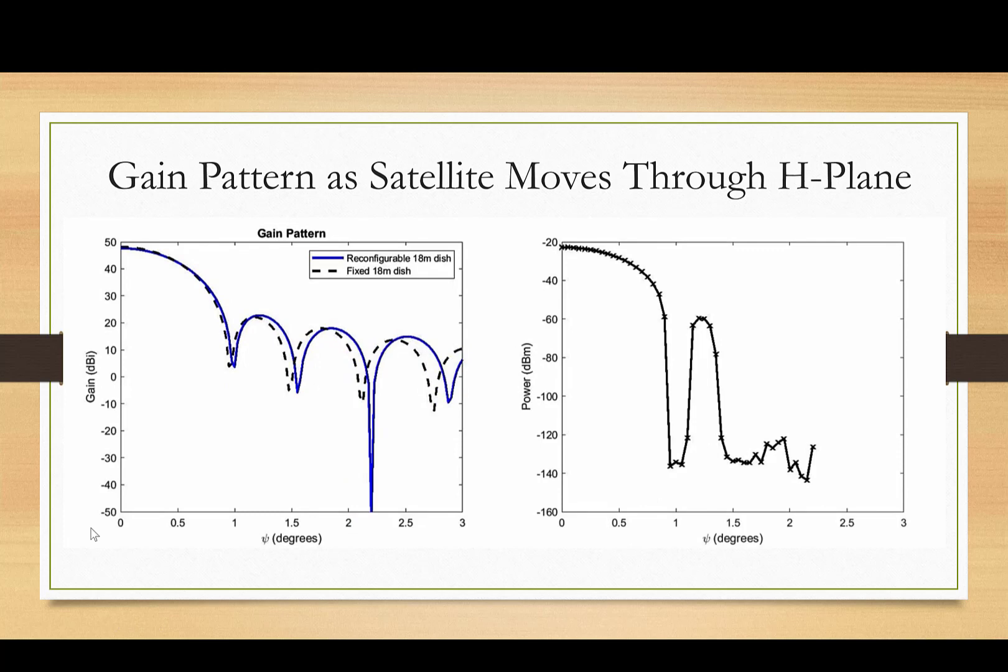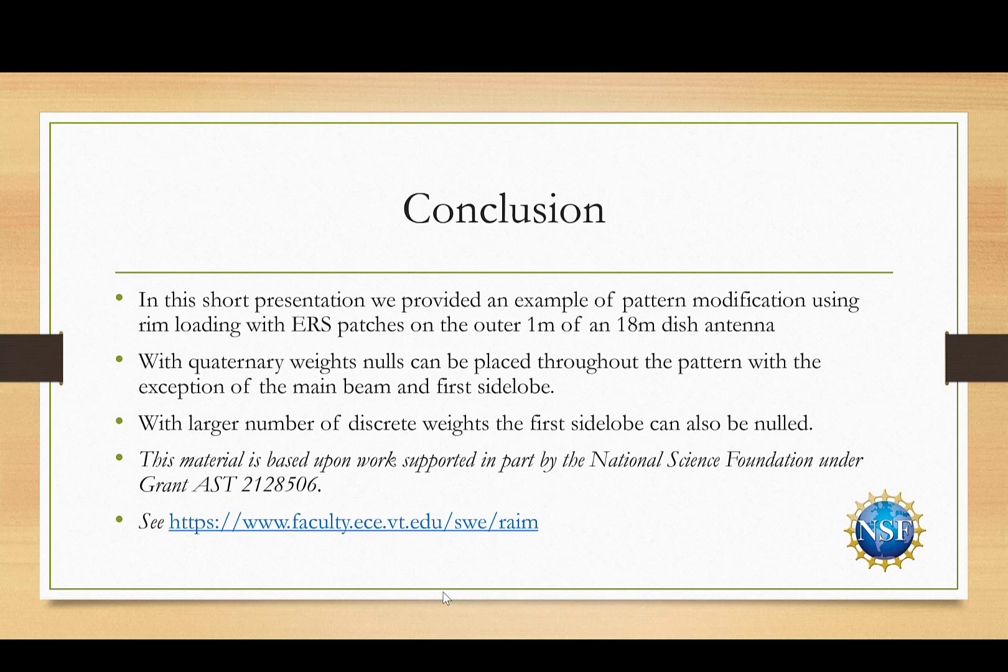So the received power throughout the rest of the pattern, until at least 3 degrees as shown here, we're able to sufficiently reduce the gain in the desired direction. In conclusion, in this short presentation, we provided an example of pattern modification using rim loading with 2,756 ERS elements placed on the outer 1 meter of an 18-meter dish antenna. Using quaternary weights, nulls can be placed throughout the pattern with the exception of the main lobe and the first side lobe.